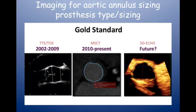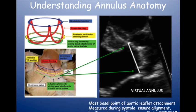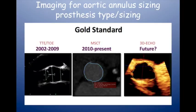TAVI was introduced first in man in 2002, and in the first seven to eight years, it was really transthoracic and 2D transesophageal echocardiography by which we measured the aortic annulus diameter and sized the TAVI procedures. It was subsequently found, when looked at retrospectively compared to CT, that transthoracic echo and 2D TOE significantly undersized the annulus — the valves we put in were too small in most cases. So we started using multi-slice CT.